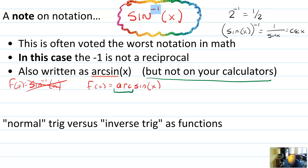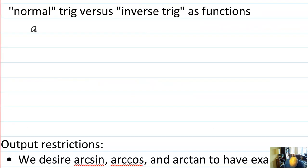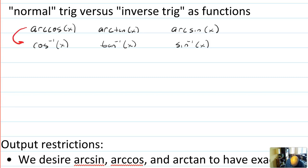Why is it called arcsine? The keyword is arc. Remember when we were learning about radians, there was a key relationship between the length of the arc and the angle it created. Since arcs are related to angles, arcsine is kind of like saying 'find me the angle whose sine is x.' And when I say arcsine, I also mean arc cosine and arc tangent — those are the three main ones. You can also have arc secant, but those show up far less frequently.